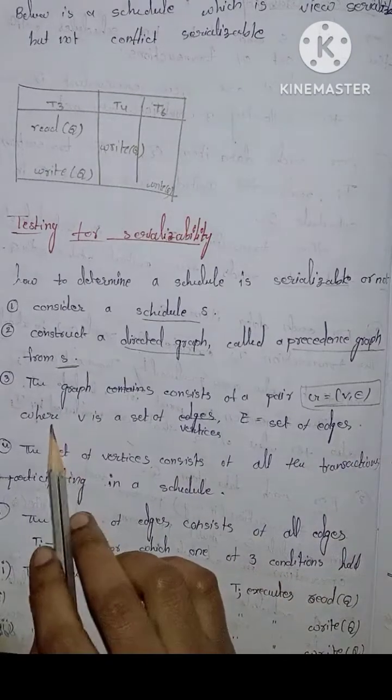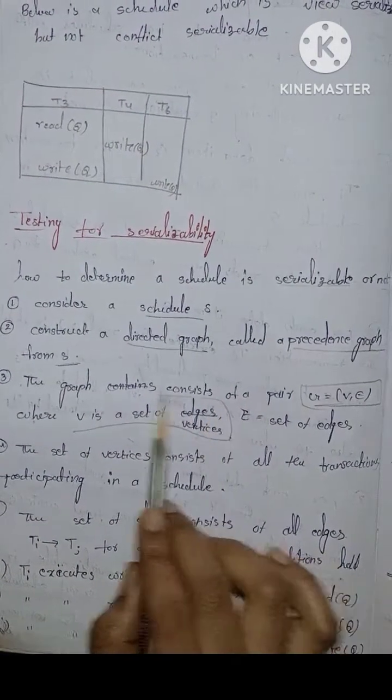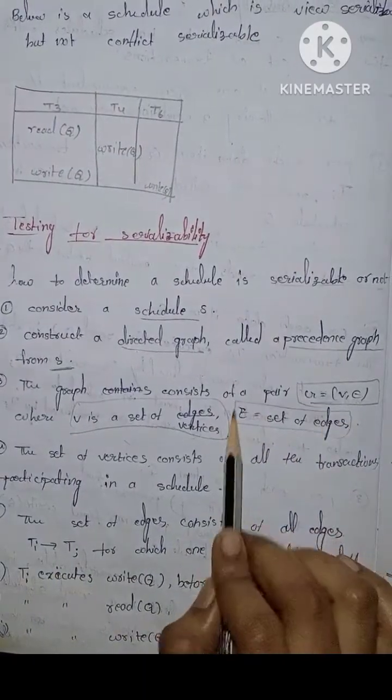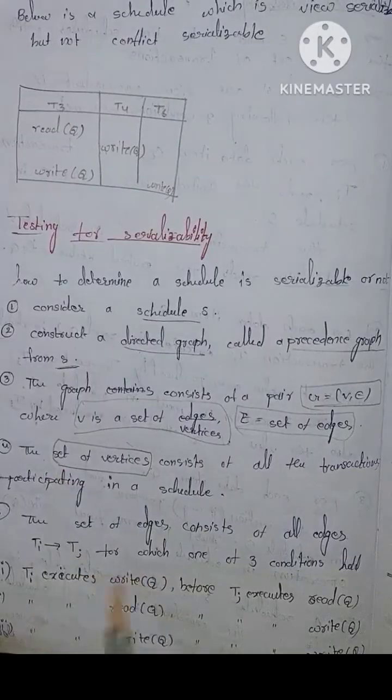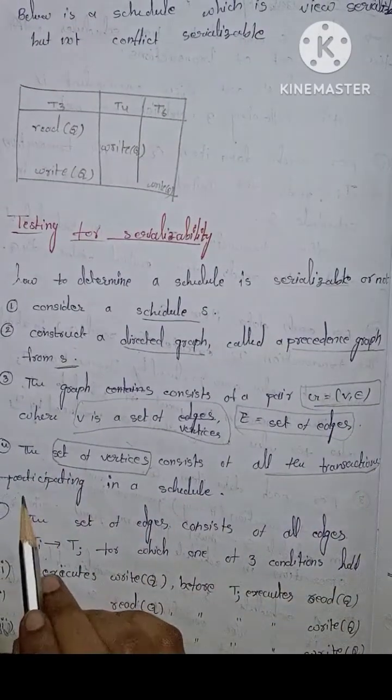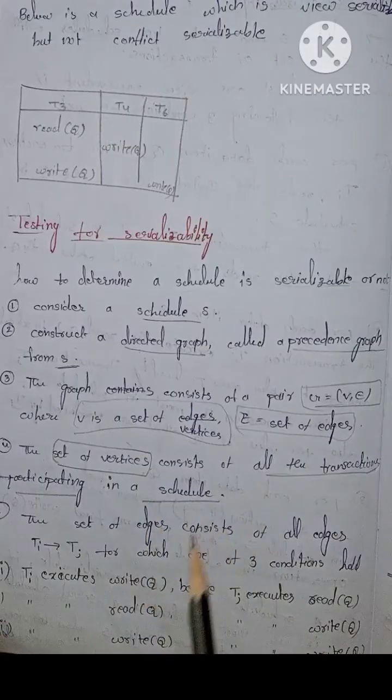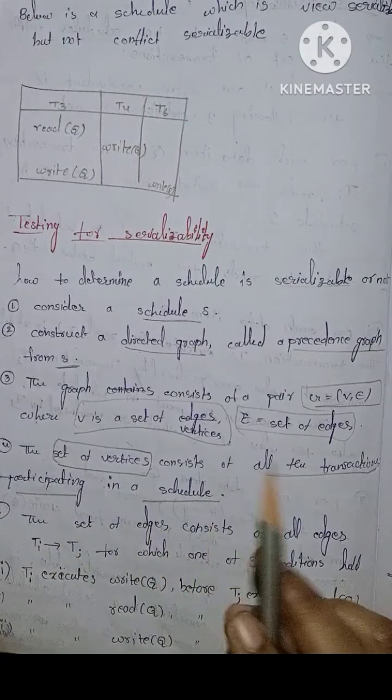The set of vertices consists of all the transactions participating in a schedule.